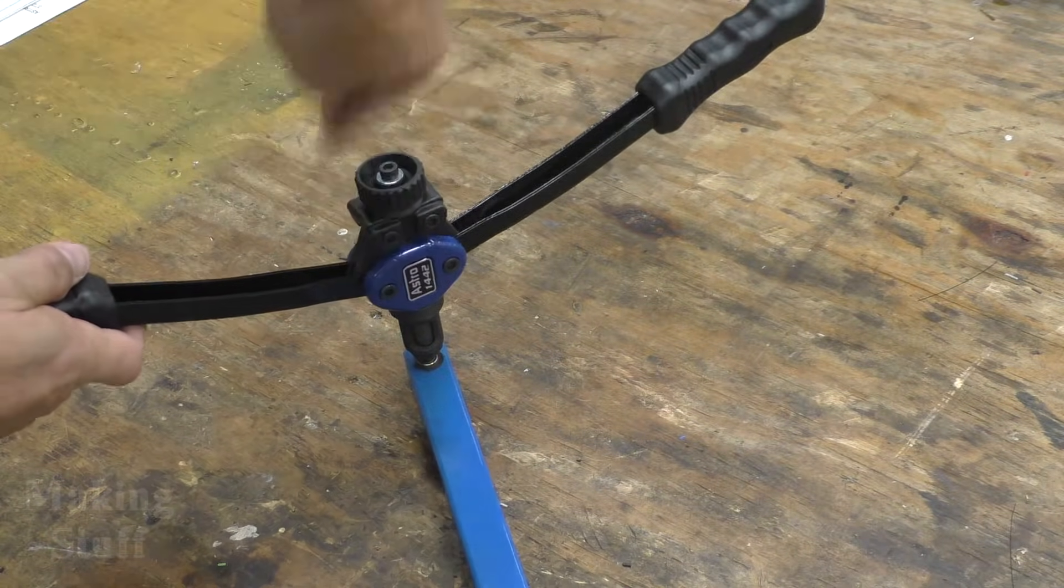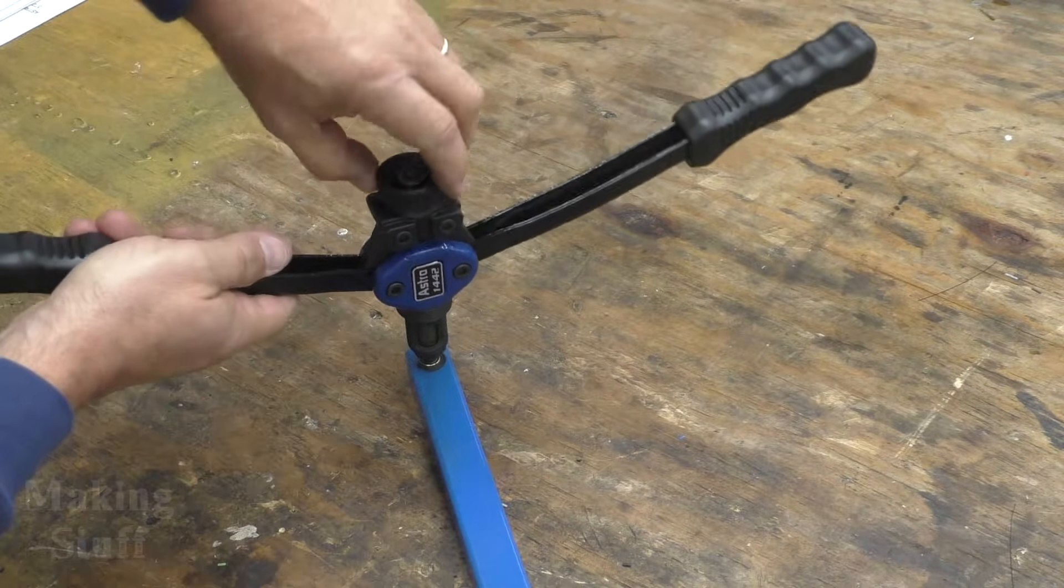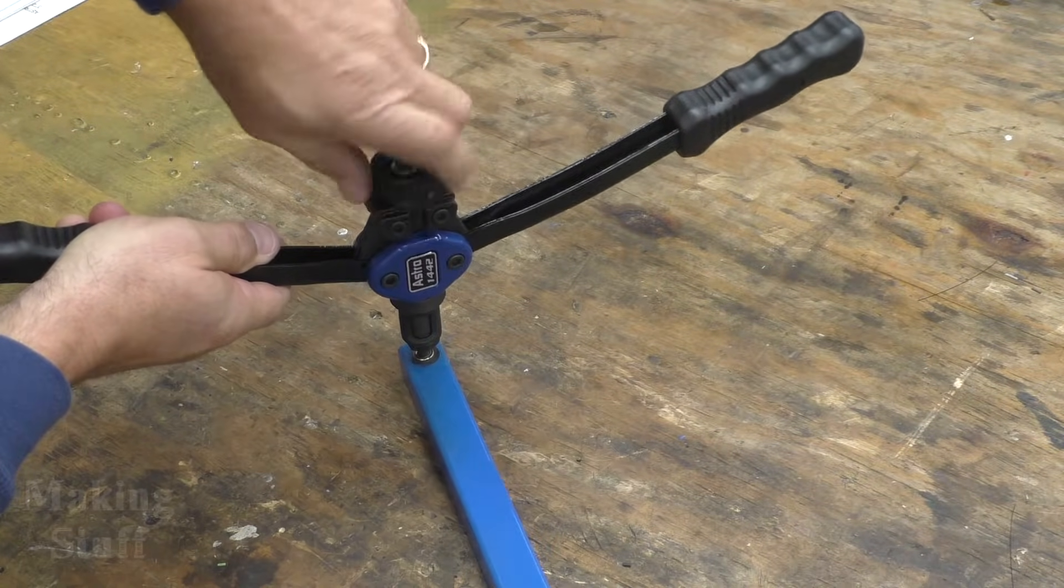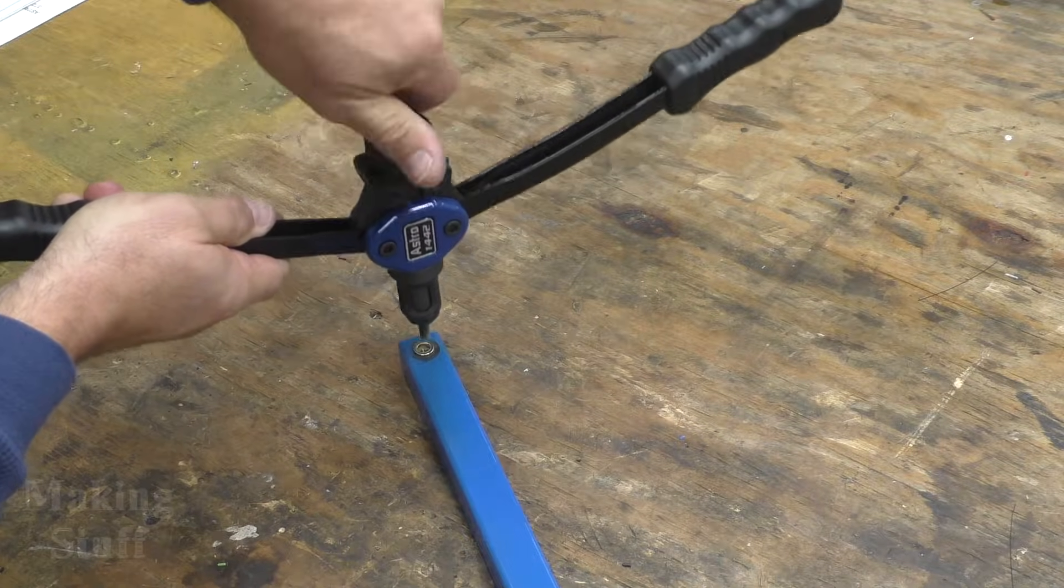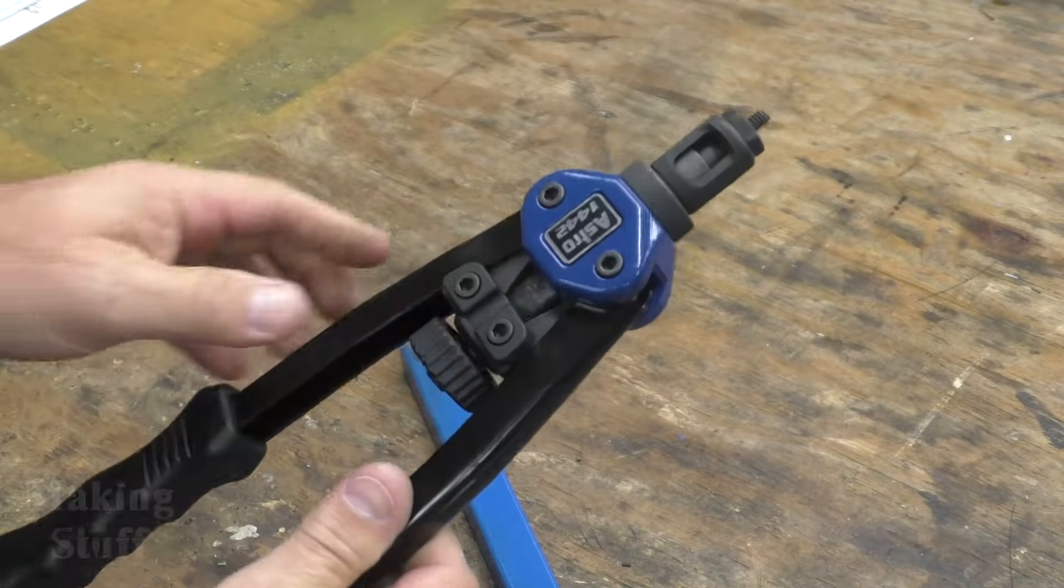Now to keep from having to spin my tool around to get this out of the workpiece, this knob on the top, that's what that's there for, that will unscrew the tool from the rivet nut that I have just installed.